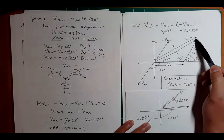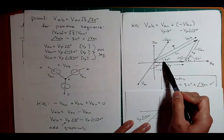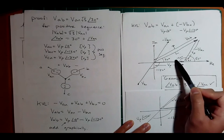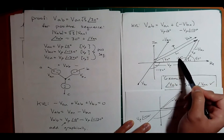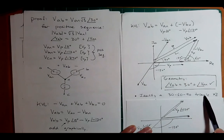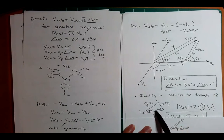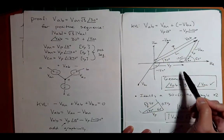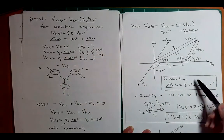Using the 30-60-90 triangle geometry from the phasor diagram: if we know the hypotenuse is VP, then each half-length is root-three-over-two times VP, so the total length of VAB is two times root-three-over-two times VP, which equals root-three times VP. So VAB is leading by 30 degrees and is root three larger than VAN. If it were a negative sequence, everything would flip and you'd get the negative 30.